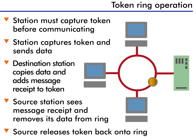This way, two devices can never attempt to transmit at the same time. Remember how we compared Ethernet's CSMA/CD to a room full of courteous students? Token Ring works like a room full of students with a microphone being passed around — you can only speak if you have the microphone.